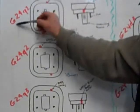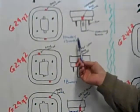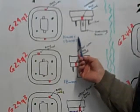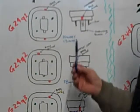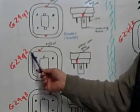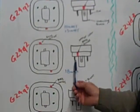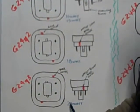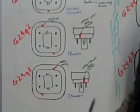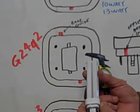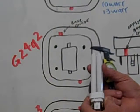Now the G24Q1 is commonly used with a 10 watt and a 13 watt. The Q2 is an 18 watt and the Q3 is a 26 watt. This is an example of a G24Q2